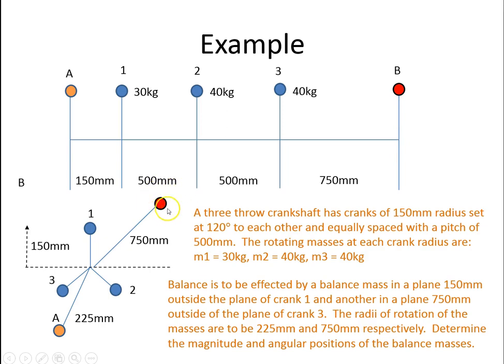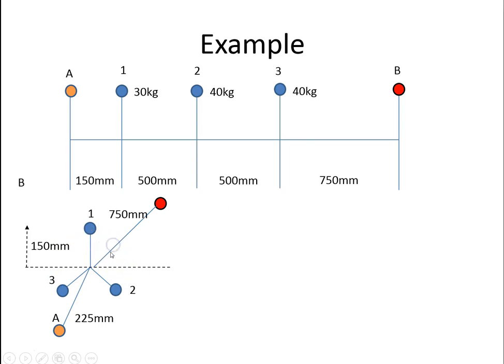So we have to find out what is the mass of A and B, and what these angles are. And when we do this question, we're going to measure all the angles from the horizontal. So this would be 90 degrees, this would be 210, this would be 330.